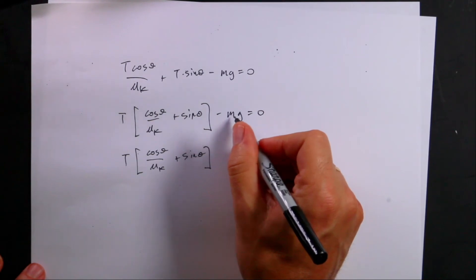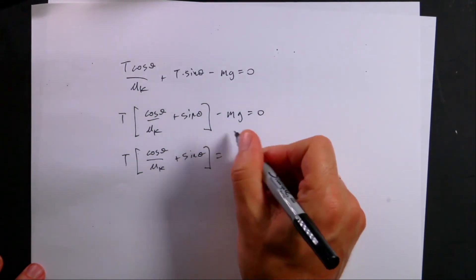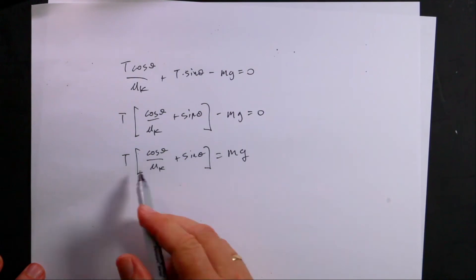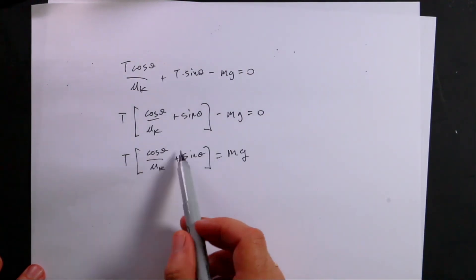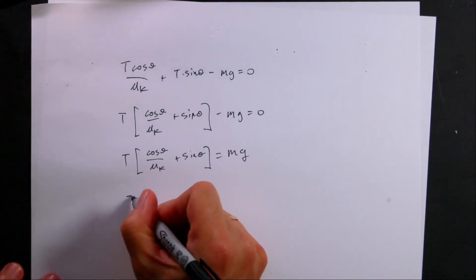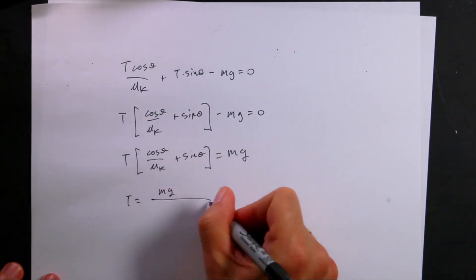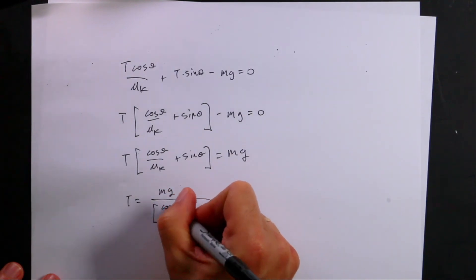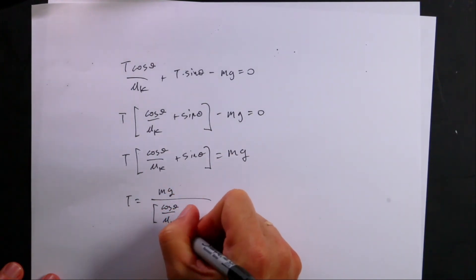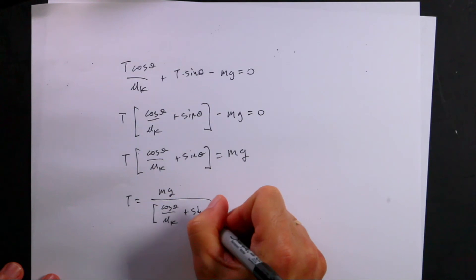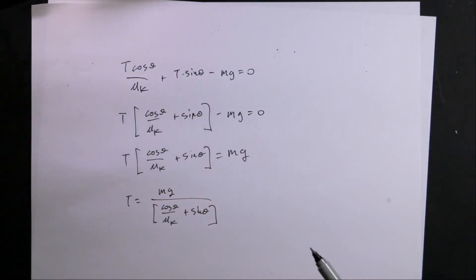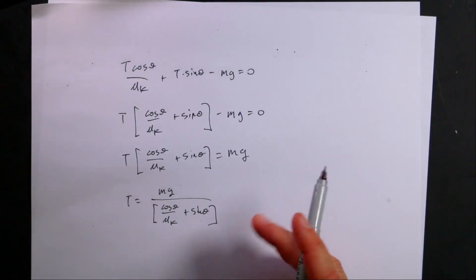Now I'm going to add mg to both sides and I get t cosine theta over mu k plus sine theta. Negative mg plus mg is zero. So that cancels. But then I have a plus mg over here. Now I want to solve for t, so I need to divide both sides of the equation by this term and I get t equals mg all of that over cosine theta over mu k plus sine theta. Now you say, oh, well, isn't there some cool trig identity you can do here? There might be, but who cares about that?